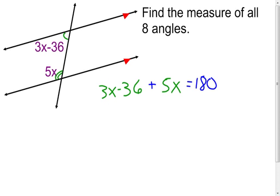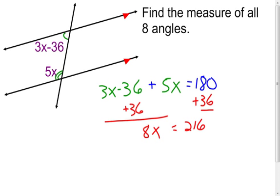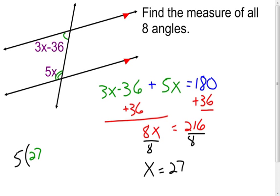I have an equation to solve: I'll add 36 to both sides to get rid of the constant on the left, leaving me with 8x equal to 216. Dividing both sides by 8, I find out that x equals 27. Now I can plug that into my two expressions for each angle.